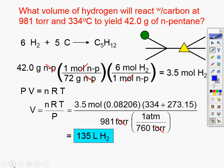Some of you started off converting your Celsius to Kelvin, which was good. You got your moles, but some of you stopped at 42 divided by 72 — who was that?